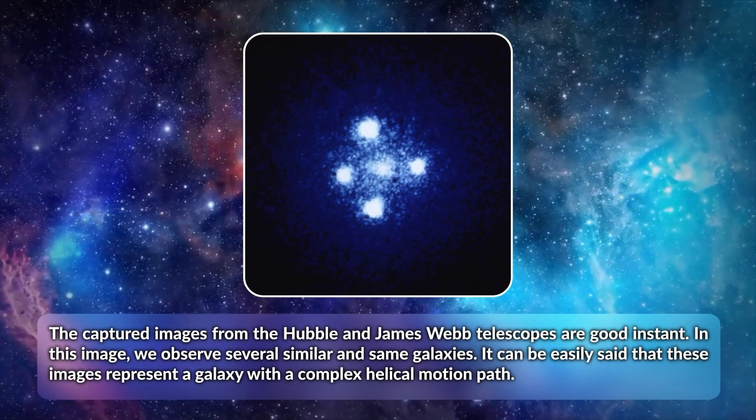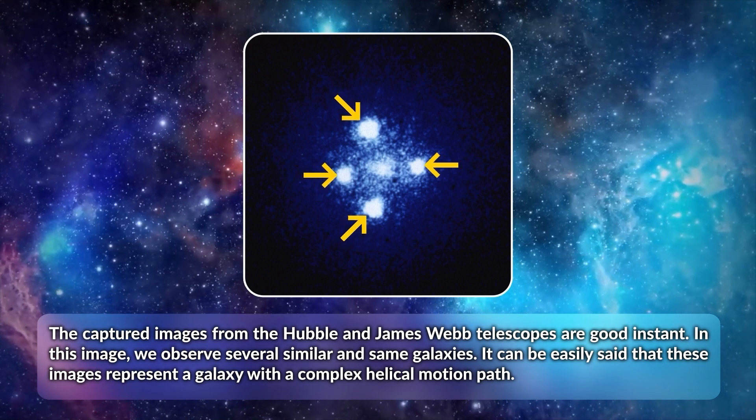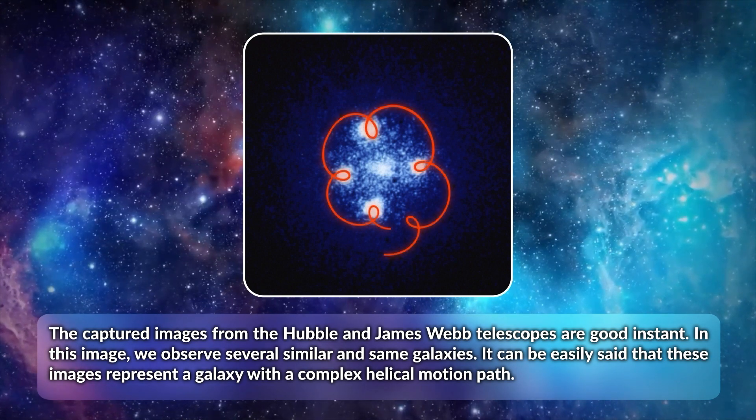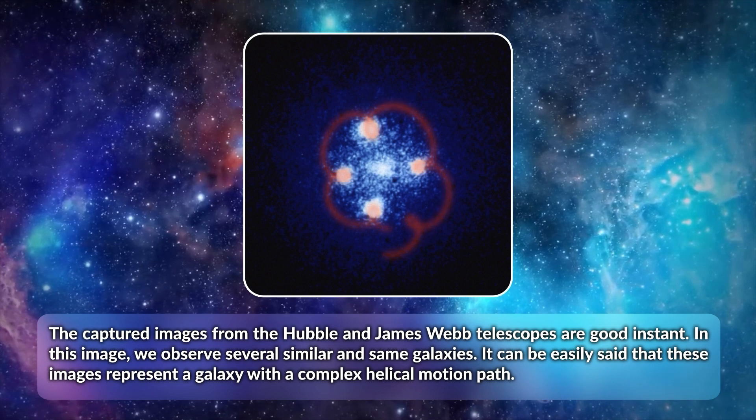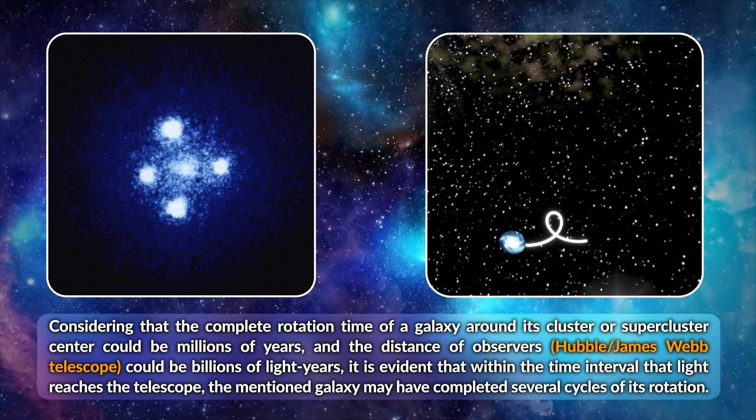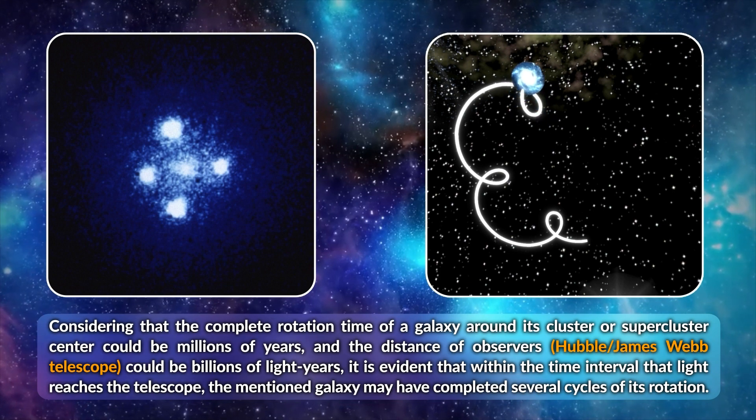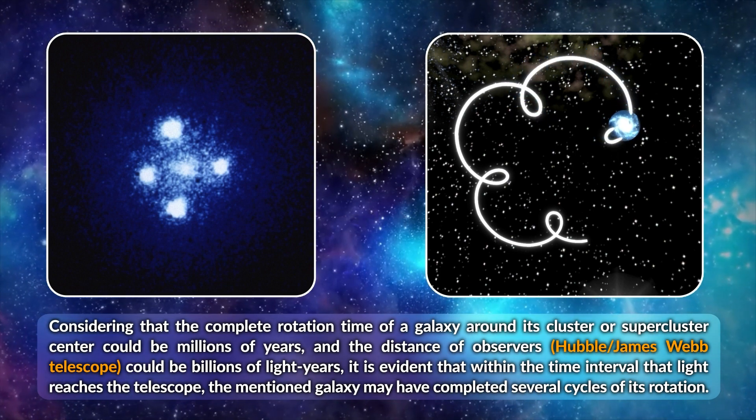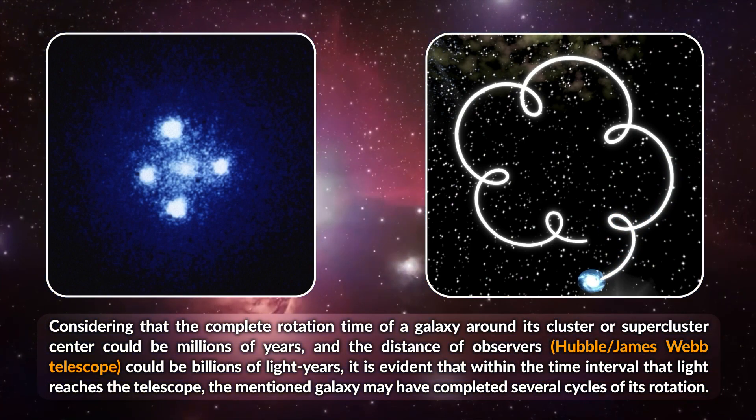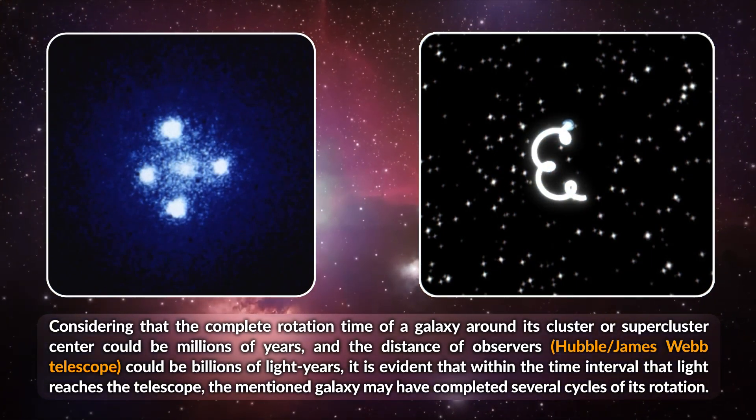The captured images from the Hubble and James Webb telescopes are good examples. In this image, we observe several similar and same galaxies. It can be easily said that these images represent a galaxy with a complex helical motion path. Considering that the complete rotation time of a galaxy around its cluster or super-cluster center could be millions of years and the distance from observers to the telescope could be billions of light-years, it is evident that within the time interval that light reaches the telescope, the mentioned galaxy may have completed several cycles of its rotation.